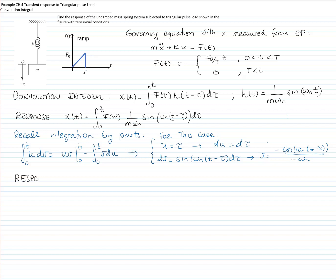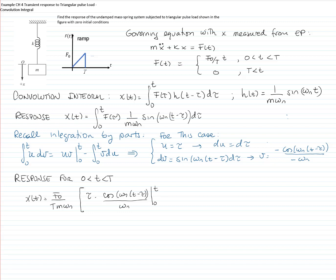Going back to our case, the force function is the ramp f_0 over capital T times tau. Applying integration by parts, the first term u·v gives tau times cosine of omega_n·(t minus tau) over omega_n, where the two negative signs cancel out, evaluated between zero and t. The next integral is cosine of omega_n·(t minus tau) divided by omega_n d-tau, with the variable of integration tau.